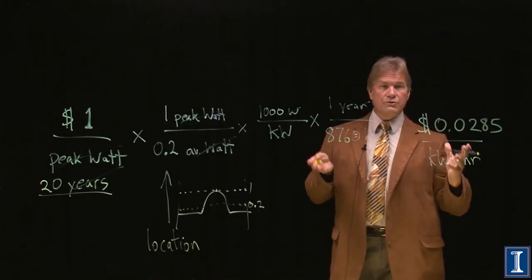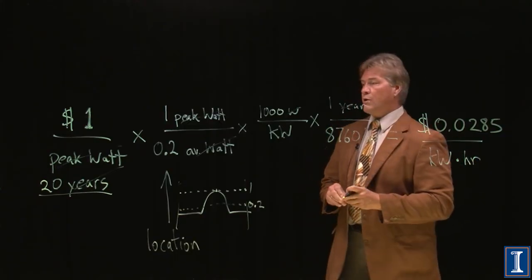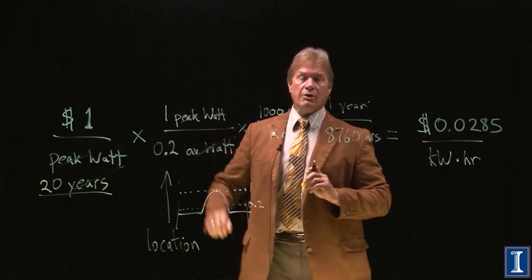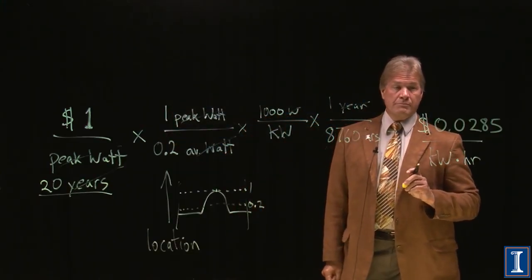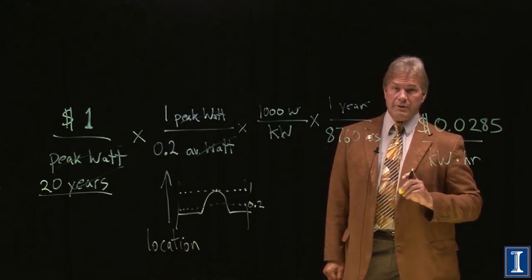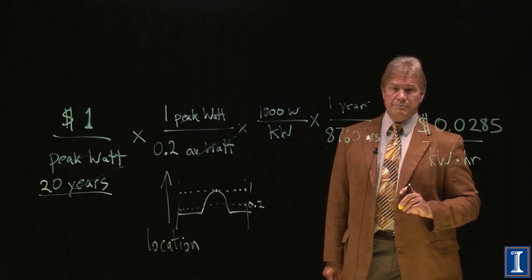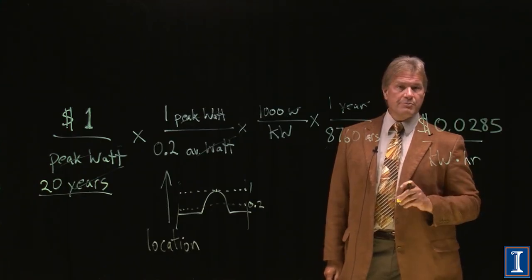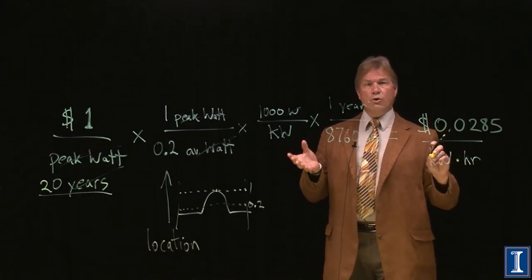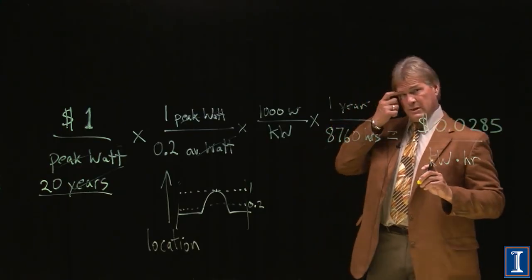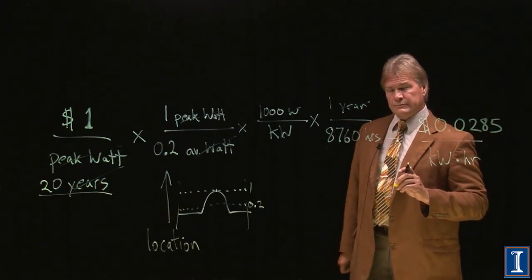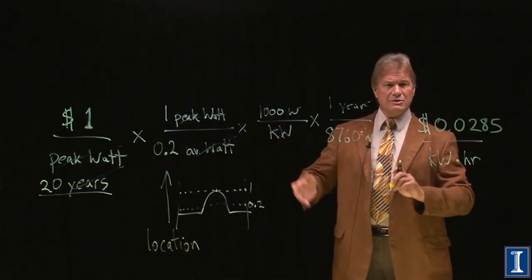A little under 3 cents per kilowatt hour if my solar cell cost a dollar per peak watt. Seems very, very good. Almost too good to believe. This is about the price that centralized coal power stations can make electricity. So why hasn't the whole world switched to solar?